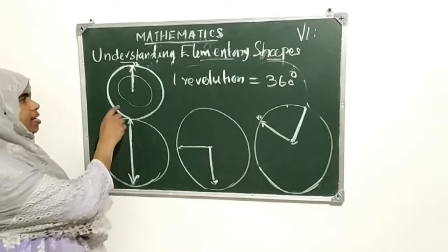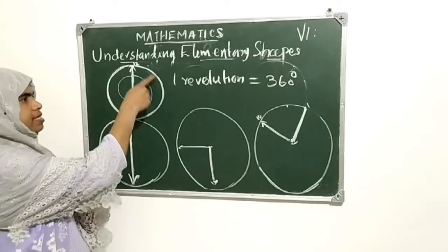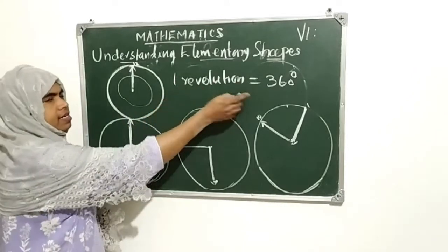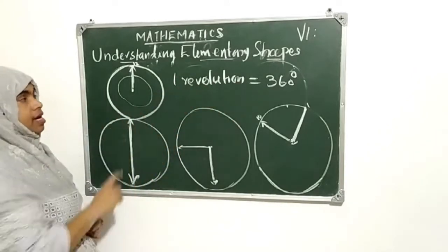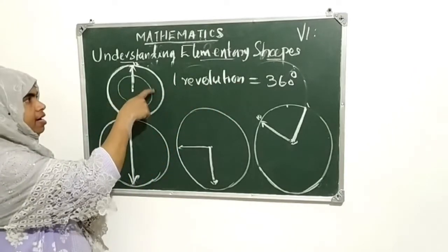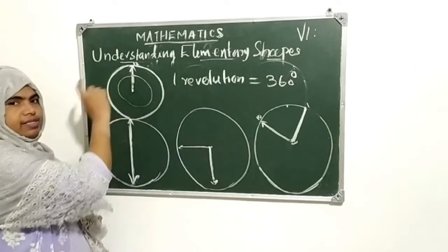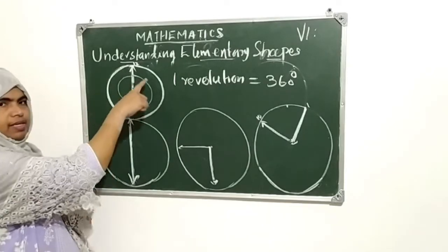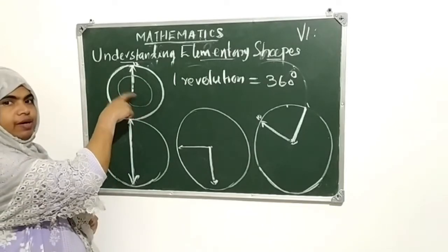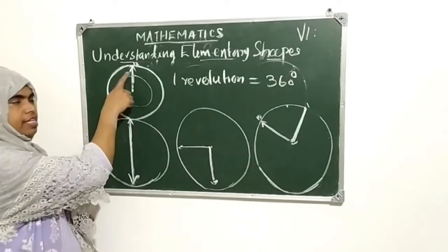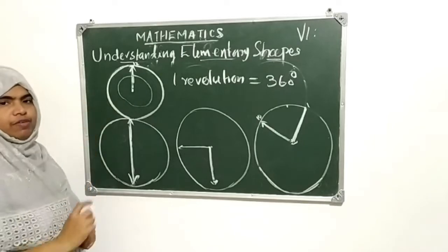See here — this is one revolution, that is 360 degrees. Starting at 12, it goes round and reaches 12 again — that is one revolution.